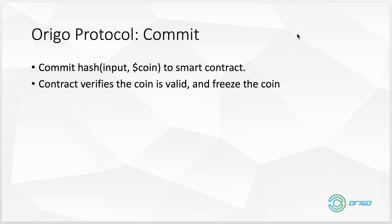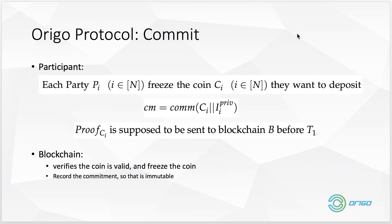After initialize comes the commit phase. What commit does is commit a hash to the smart contract. The smart contract verifies that the hash of the inputs and the coin is valid, and then freezes the coin. In the detail of commit, only two roles need to participate at this stage — the executor does not need to participate.